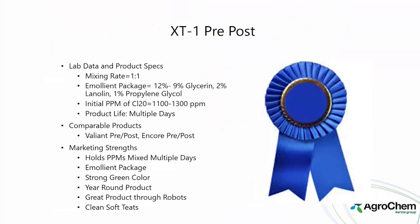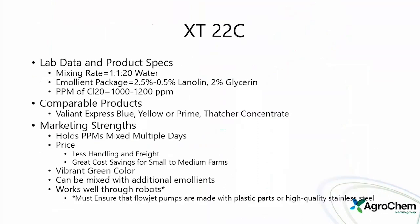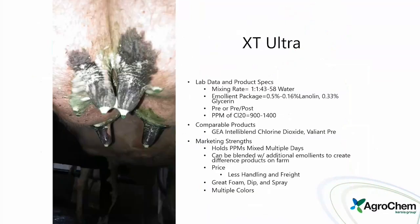XT22C is one of our concentrate products. It has the same ppm range when mixed and still holds for multiple days. Less handling and freight due to concentrate form makes it a great cost-saving option for small to medium farms. For larger farms, it is our most concentrated at 1-to-43 up to 1-to-58 mixing rates. Emollient packages start at half a percent and can be increased, and additional emollient packages can be blended in.